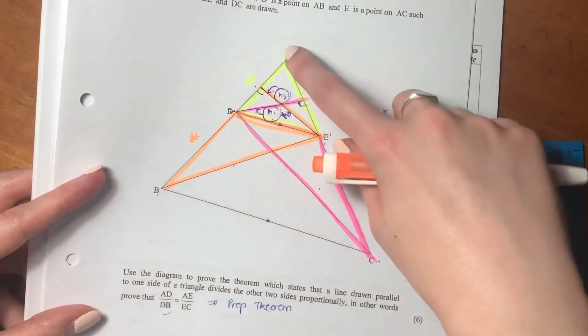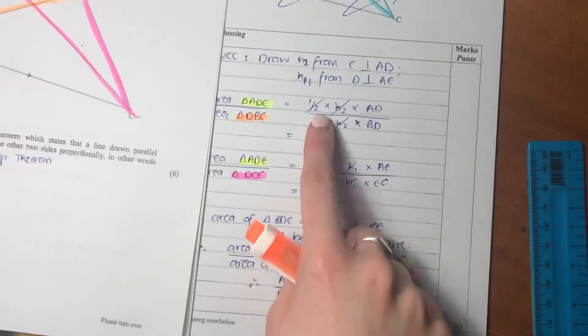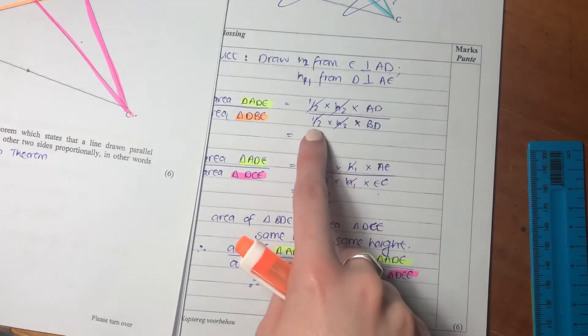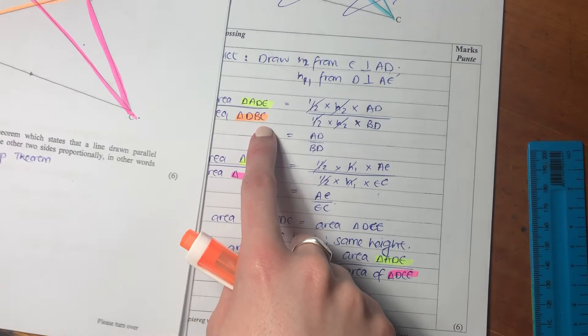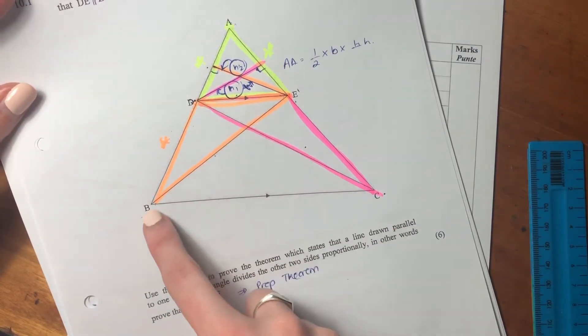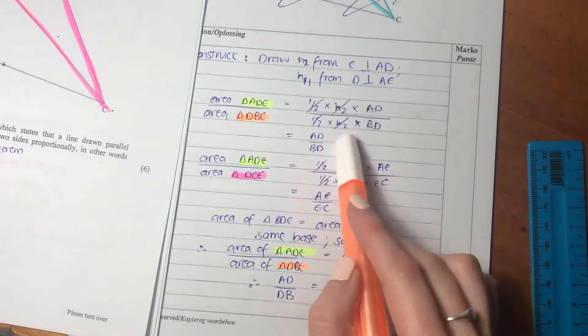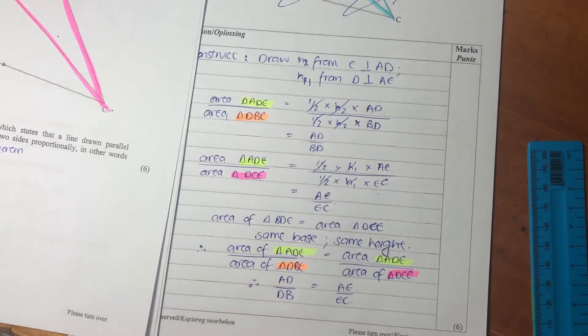So ADE, I'm using AD as a base, I'm saying H2 is my height, and I'm going to times it by half. So I've written that there. Similarly for DBE, I've said H2 is my height, I'm going to use DB as my base, and I'm going to put that in there. So I've done that, cancelled where I can, and it leaves me with AD over BD.